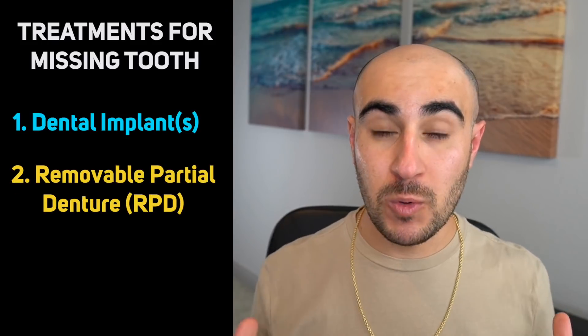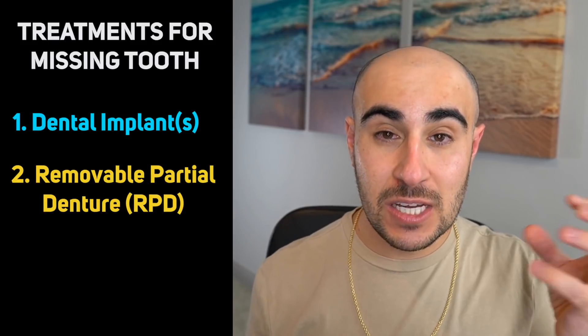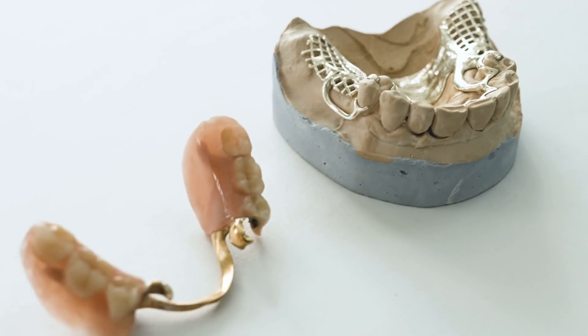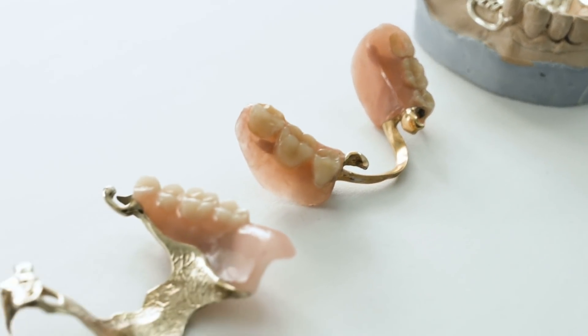The next most conservative way your dentist can treat the space caused by a missing tooth is by something called a removable partial denture, or RPD. This is basically a metal framework that has a certain number of teeth — either one or several — replaced, and you can take them in or out. This is great for maintaining hygiene, but a lot of people don't like these because they can flop around a little bit and they're not as comfortable. With implants, you don't even know they're there, but with partial dentures, they can be taken in and out.